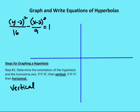Let's take a look at this first equation: (y minus 2) squared over 16, minus (x minus 2) squared over 9, is equal to one. I can see that because the value for the positive variable in this case is y, I know that the transverse axis is going to be vertical.